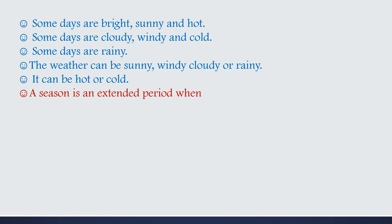A season is an extended period when the weather remains unchanged. Unchanged means for some time the weather remains the same.